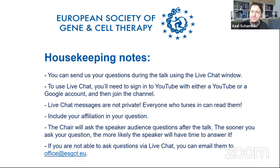Hello everybody. My name is Axel Schambach and I'm a professor at Hanover Medical School. I would like to welcome you to ESGCT's e-series, a series of lectures about gene and cell therapy. ESGCT, the European Society for Gene and Cell Therapy, is a non-profit organization aiming to promote fundamental and clinical research in gene therapy, cell therapy, and genetic vaccines. Part of our mission is education and training, and we therefore launched the ESGCT e-school series.